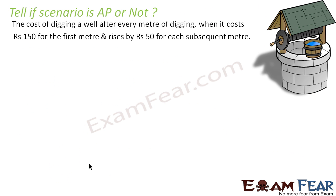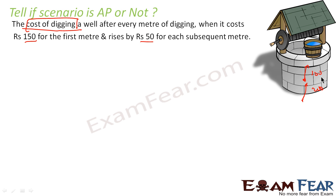Let's take one more scenario: the cost of digging a well after every meter of digging. The cost for the first meter is 150 rupees and it rises by 50 rupees for every subsequent meter. So for the first meter the cost is 150, and for the next meter it is 150 + 50 = 200, then 200 + 50 = 250.